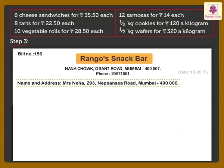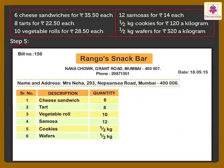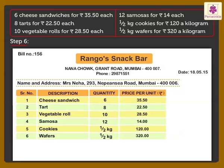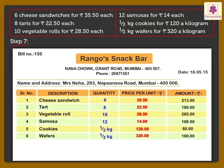Step 3: Write the date on which the items are sold. Step 4: Write the serial numbers of the purchased items. Step 5: Write the name and quantity of items purchased. Step 6: Write the price per unit of the items purchased. Step 7: Multiply the cost of each item with its quantity to get the total cost of each item.